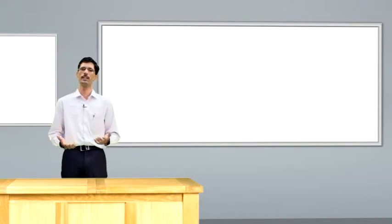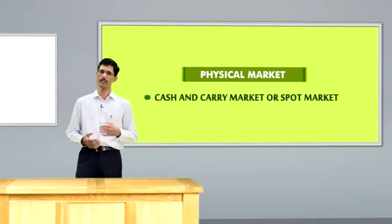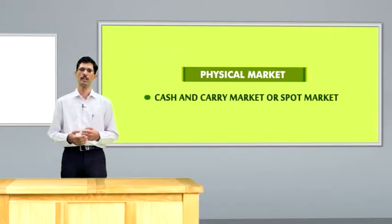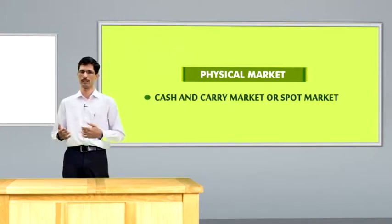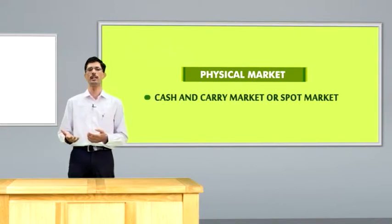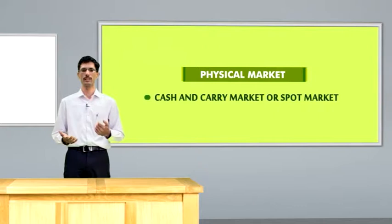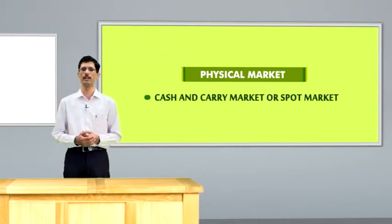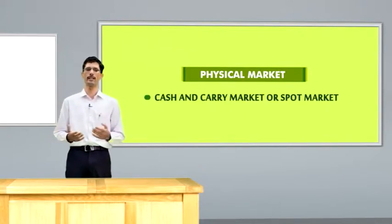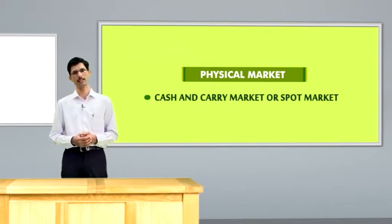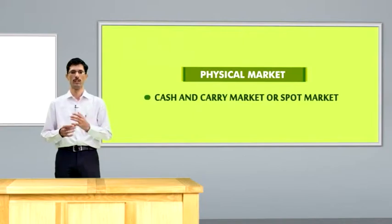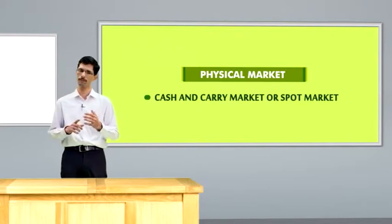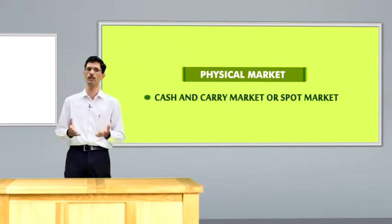First we will try to learn what is physical markets. Physical markets, in other words we call it cash and carry market or a spot market. Cash and carry market, because one has to take the cash in the market and negotiate with the seller of the commodity and take the commodity and give the cash on the spot. In this market, sellers agree to deliver the commodity and buyers agree to make the payment on the spot. Delivery of commodity happens on the spot as well as payment, that is how it is called spot market.